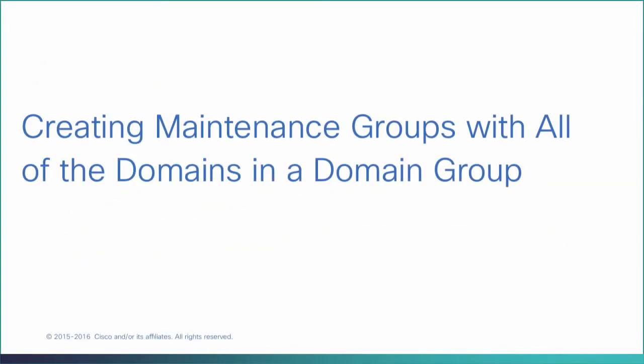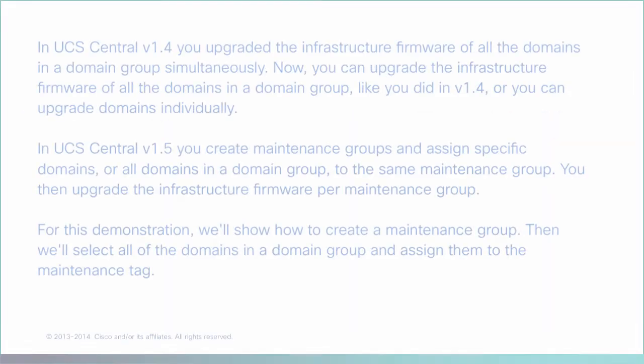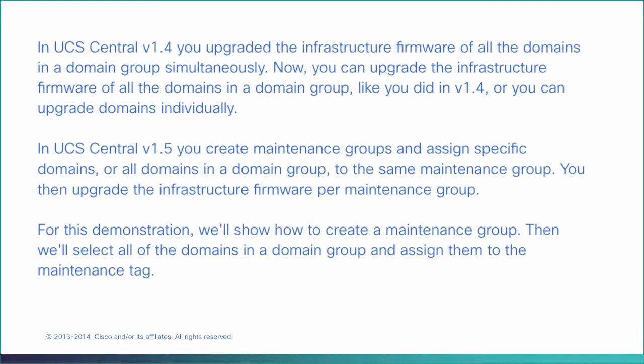In UCS Central version 1.4, you upgraded the infrastructure firmware of all the domains in a domain group simultaneously. Now in version 1.5, you can still upgrade all domains in a domain group at once like in version 1.4, or you can upgrade domains individually. You create maintenance groups and assign specific domains or all domains in a domain group to the same maintenance group, then upgrade the infrastructure firmware per maintenance group.